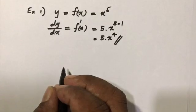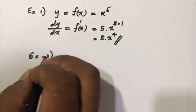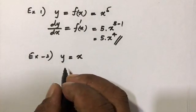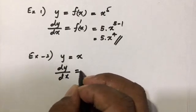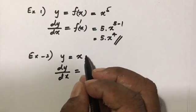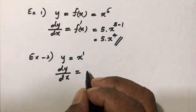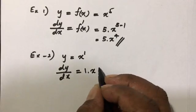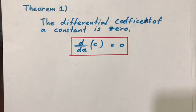Example number two: y equals x. The derivative of y equals dy/dx. We know there is a power of 1, so bring down the 1 to the front as a coefficient — 1 times x — and reduce this power by 1, giving us 1 times x to the zero, which equals 1.